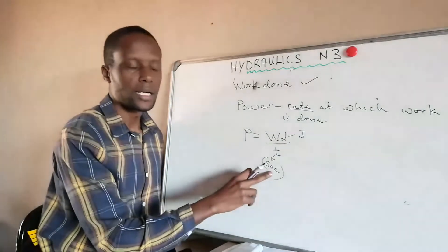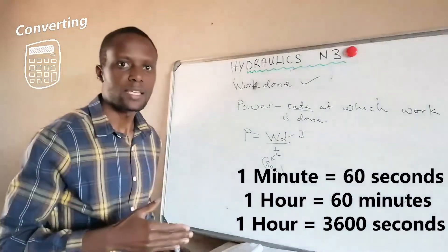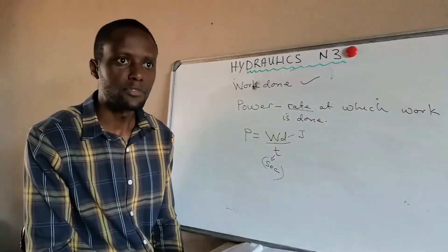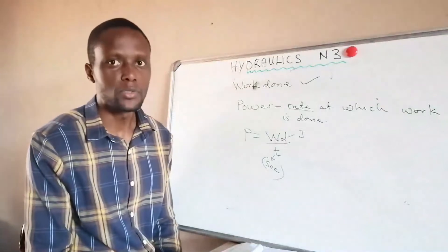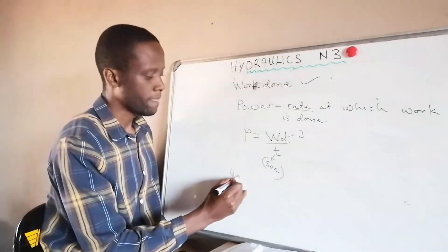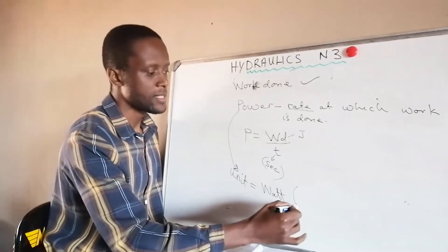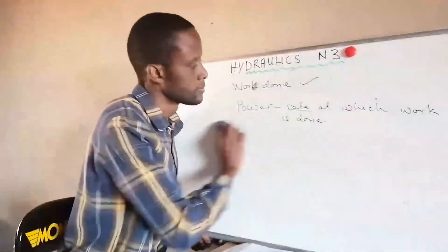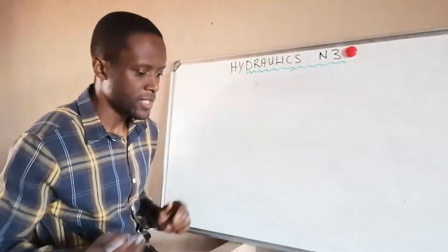This takes us back to how to convert time from minutes or hours to seconds. We should be able to convert any unit of time to seconds. The unit for power is watts (W).